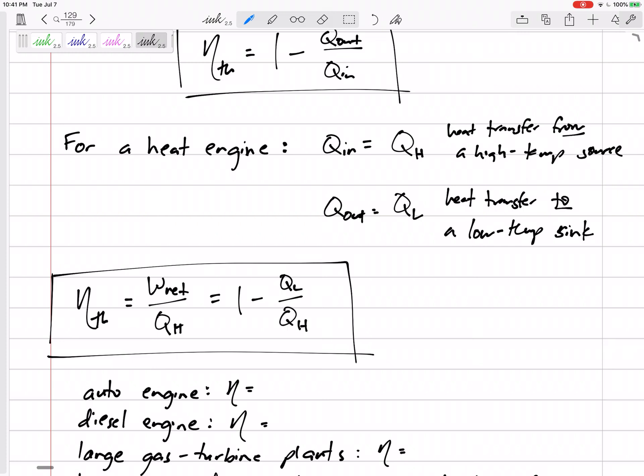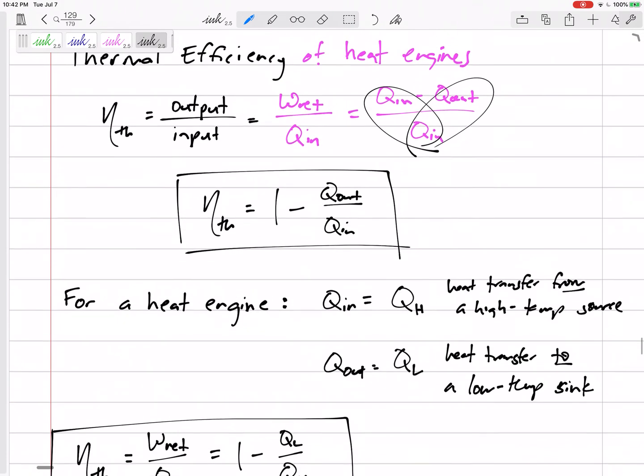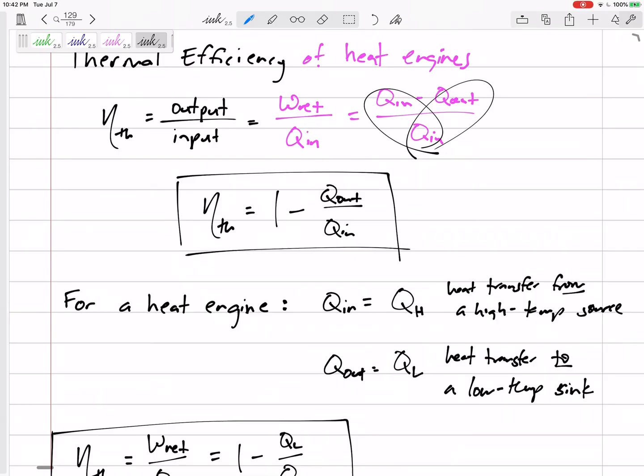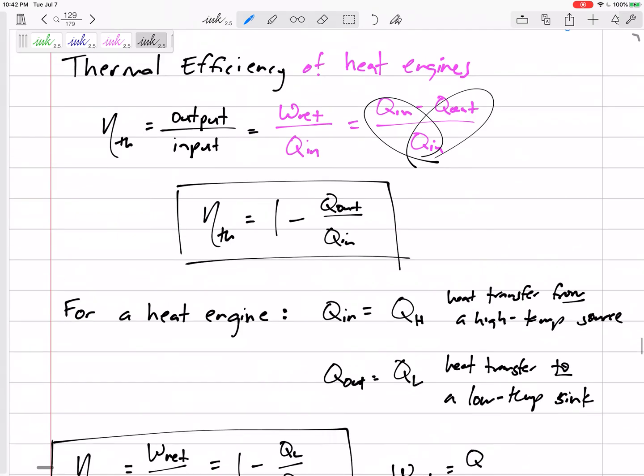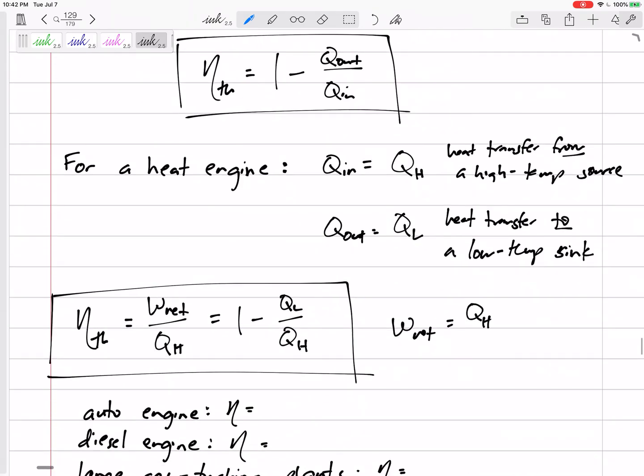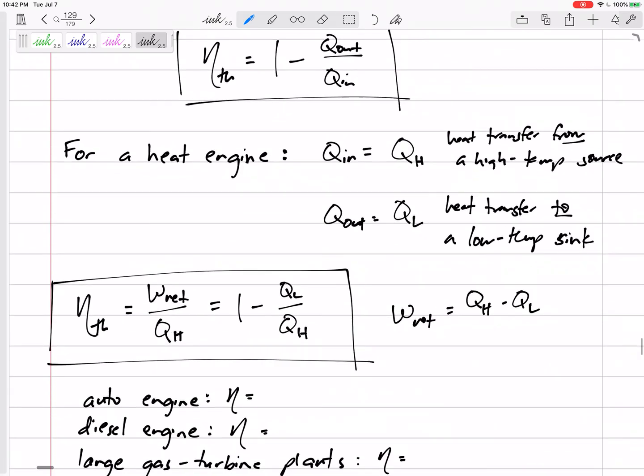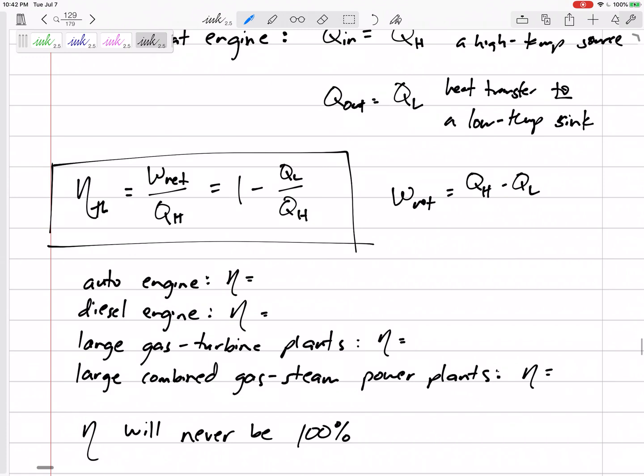W_net = Q_H - Q_L, and η = W_net / Q_H, also equal to 1 - Q_L / Q_H. I'll send you a link of an animation of a four-cylinder engine, it's pretty cool to look at. But what efficiencies are we looking at? How much heat do we convert to work?